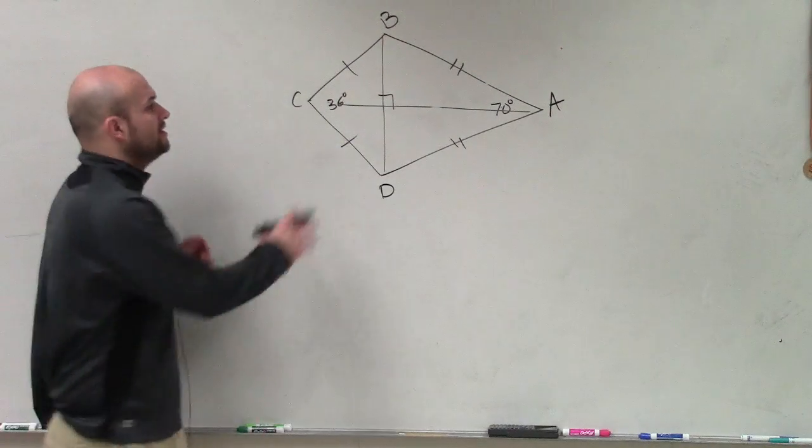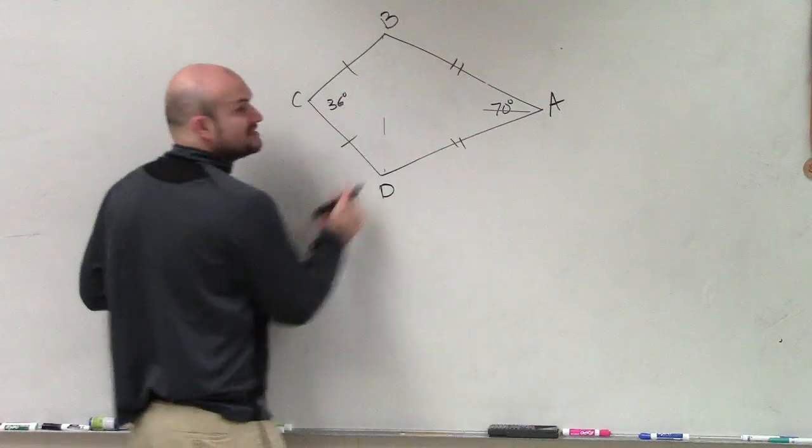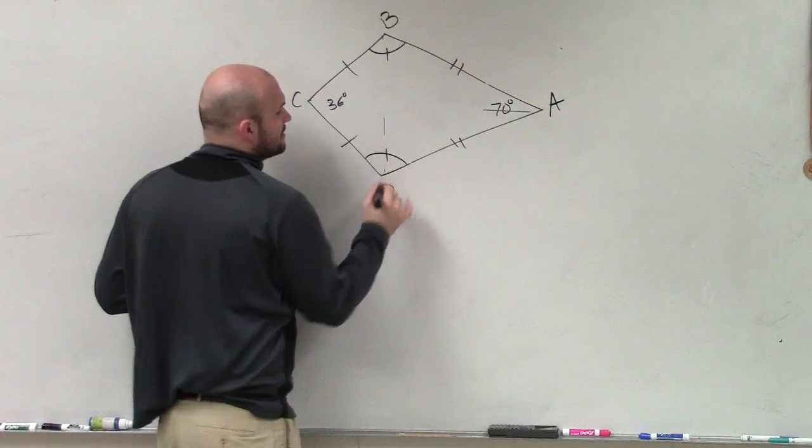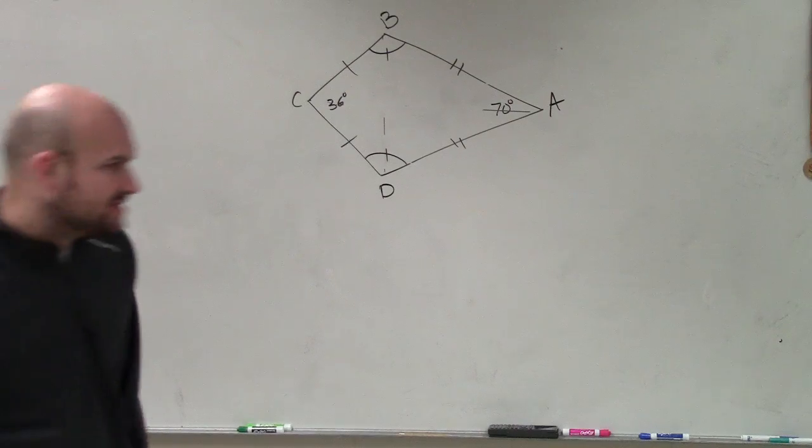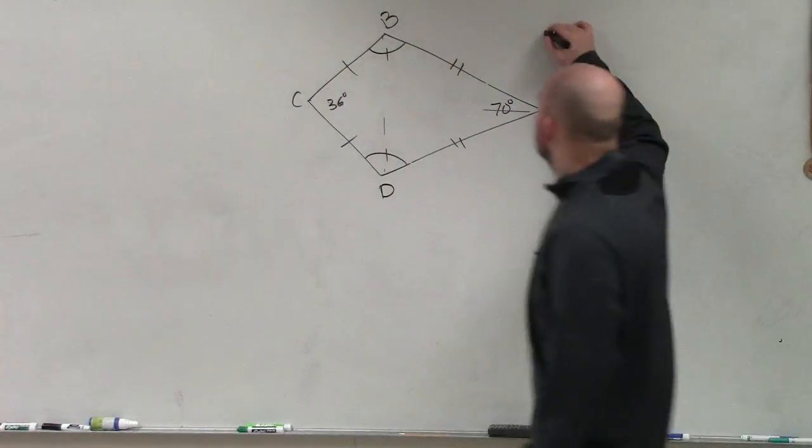And then also, the other piece of information that's going to be helpful for us is that there's at least one pair of opposite angles that are congruent. So this question is asking, find measure of angle D.